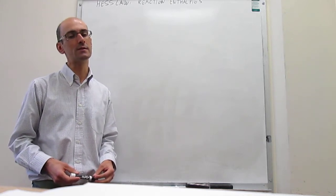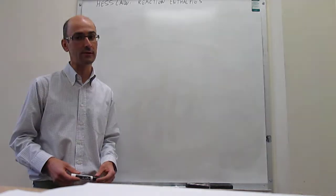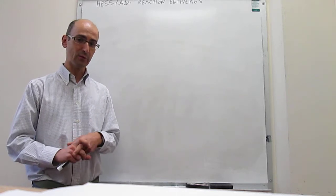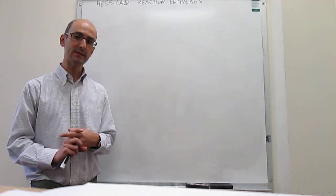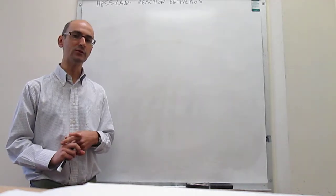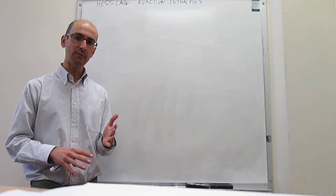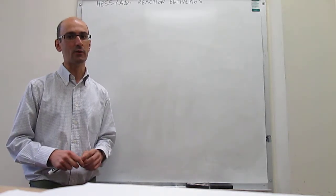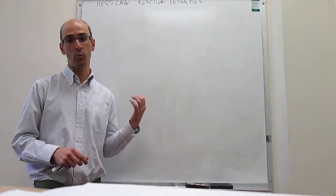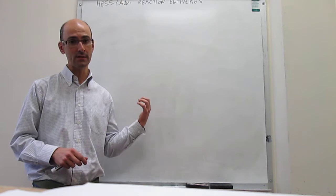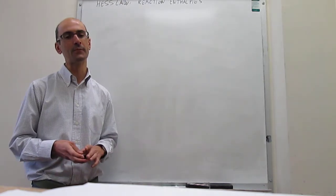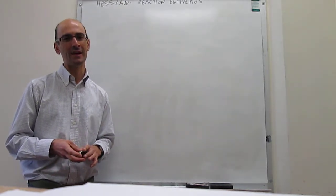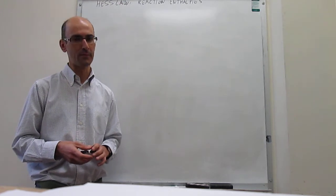There are a few ways to calculate the reaction enthalpy. One of them is using mean bond enthalpies, which is something we learned to do last semester. In the next couple of videos, we're going to see two different ways to calculate the reaction enthalpy. One of them is with Hess's law, which is what we're going to do right now. And then in the next video, we'll look at the enthalpies of formation method.